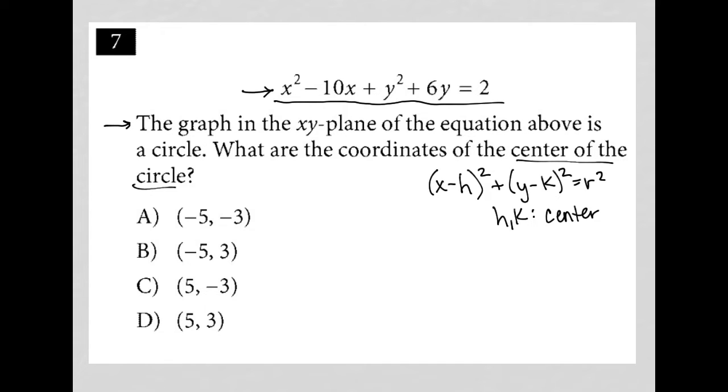Our job is to convert this format here that was provided into this format here. We see that we have an x squared minus 10x. How do I get that x squared minus 10x to somehow become the format of x minus h squared? In order to do that, I'm going to have to use a process called completing the square.